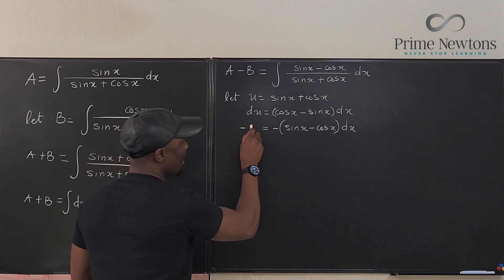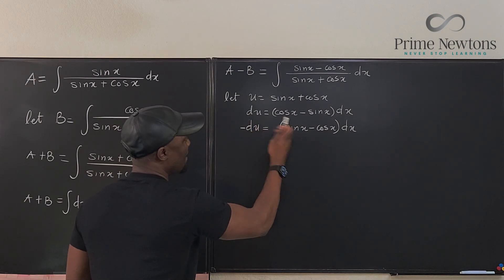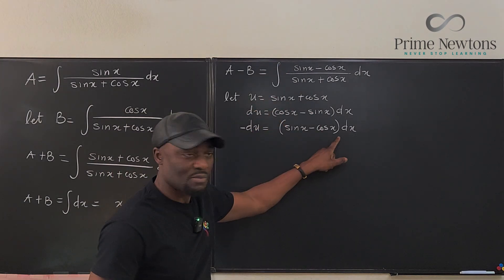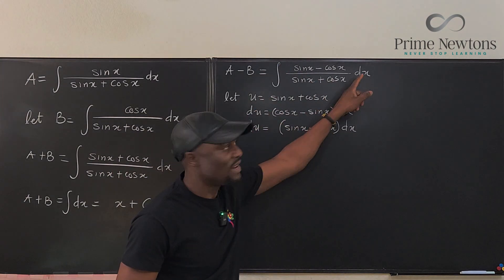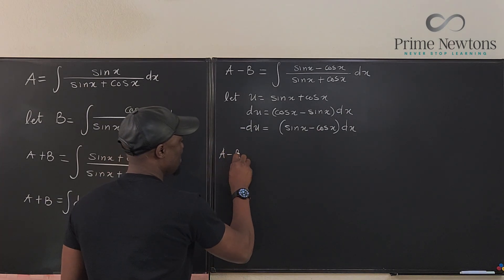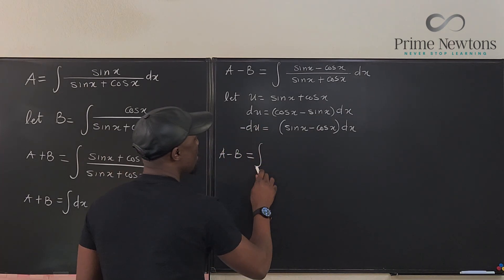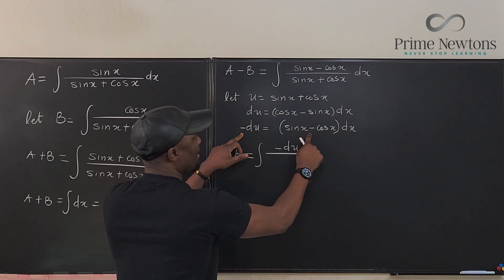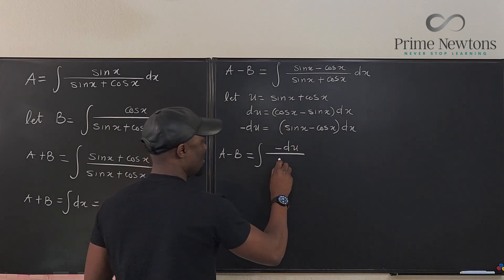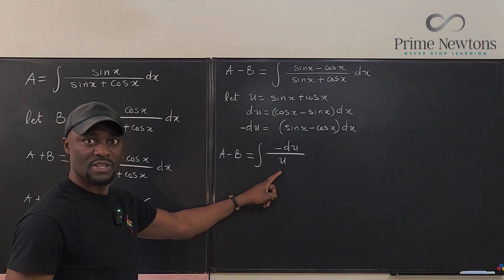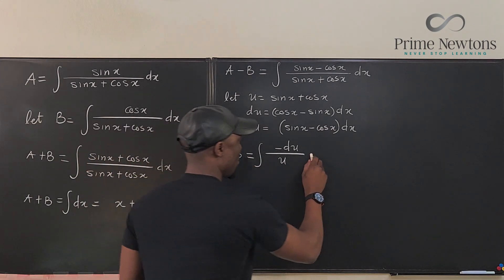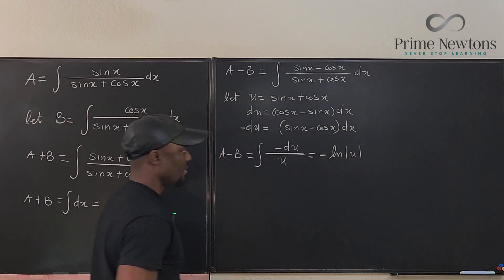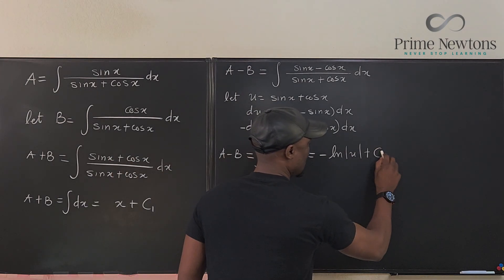We can say negative du, and then move this negative over to this side. So I'm going to replace the top with sin(x) minus cos(x) dx, which is what I have already here. So A minus B equals the integral of negative du over u. We have the answer to this.